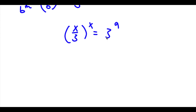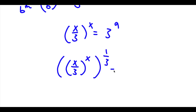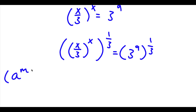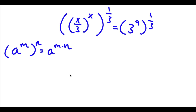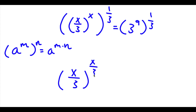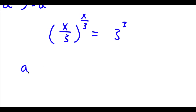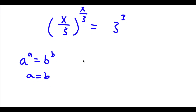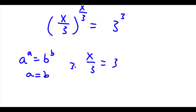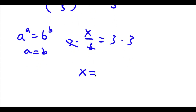If I have something in the form a to the power of m over b to the power of m, this is equal to a over b to the power of m. So x to the power of x over 3 to the power of x we can rewrite as x over 3 to the power of x is equal to 3 to the power of 9. Now I'm going to take the power of 1 over 3 on both sides, giving x over 3 to the power of x times 1 over 3, which is x over 3, equals 3 to the power of 9 times 1 over 3, which is 3 to the power of 3. Using a to the power of a equals b to the power of b, x over 3 equals 3, so multiplying both sides by 3 gives x equals 9.